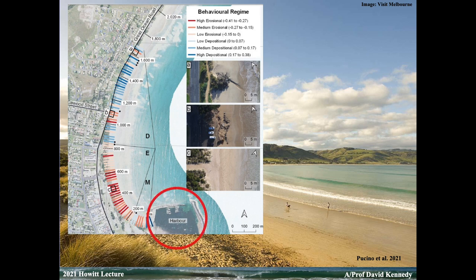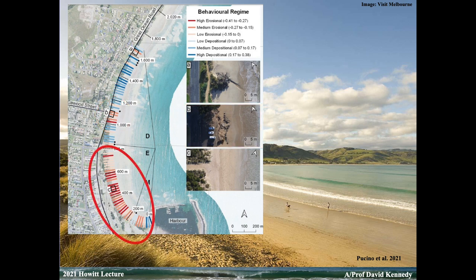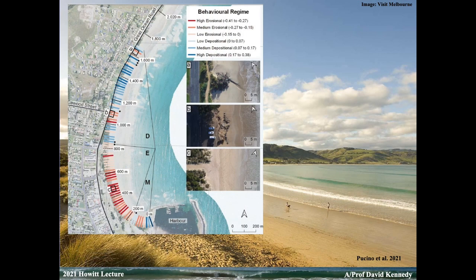At Apollo Bay we can see we've got a harbour and areas of erosion marked in red, and an erosional section where there's a car park. But importantly we have different areas alternating: accretional, erosional, accretional, erosional. It's really important to see the beach embayment moving around as a three-dimensional structure. You often find hotspots of erosion — this is often where the rip currents are, usually where surf clubs are built, the most dangerous spot for swimming.